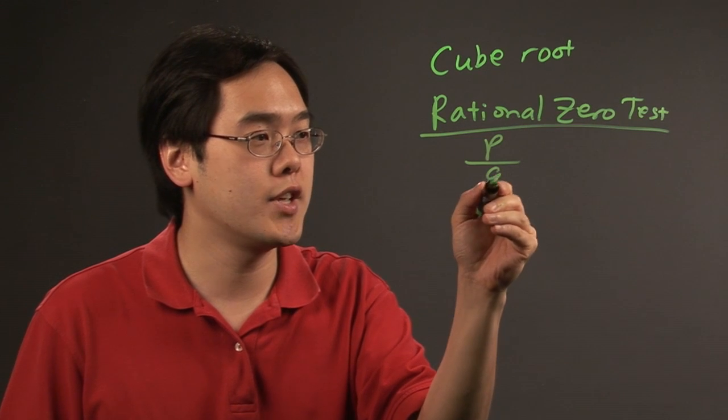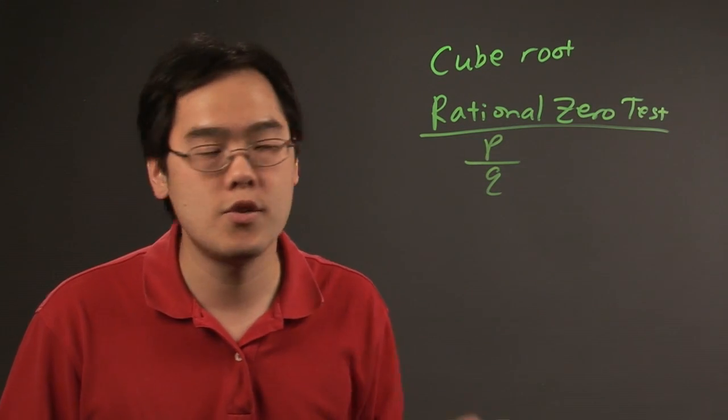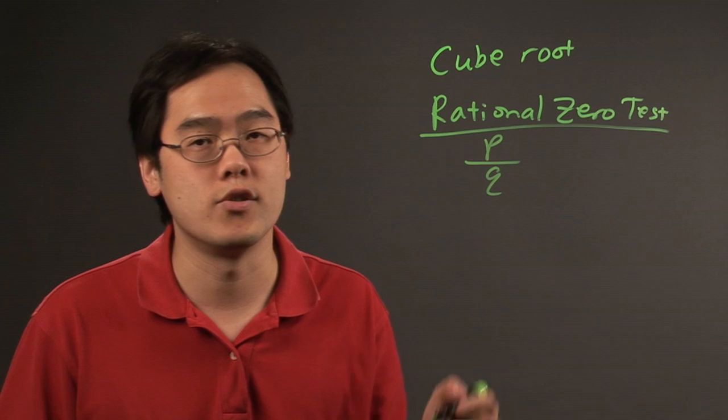Now, what that means is you have p over q. p are the factors of the constant term and q involves the factors of the leading coefficient.